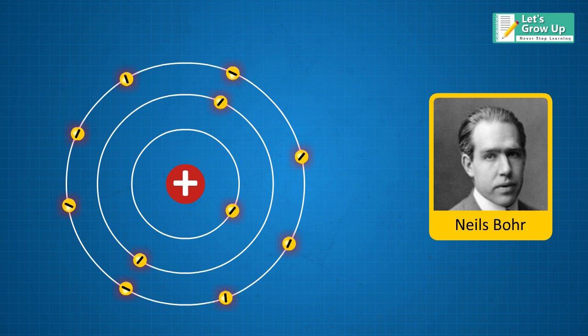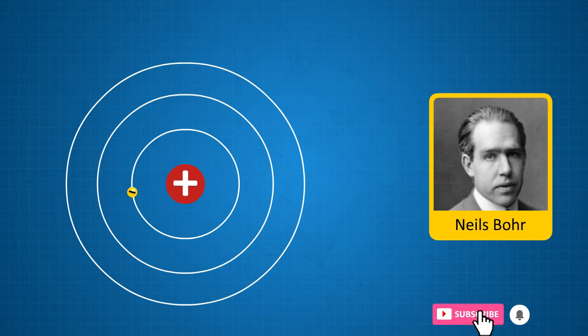When an electron of a specific shell absorbs more energy, it jumps to the next higher shell. And when the electron loses its energy, it falls back to the previous shell. He also introduced the theory that each shell could hold a specific number of electrons.